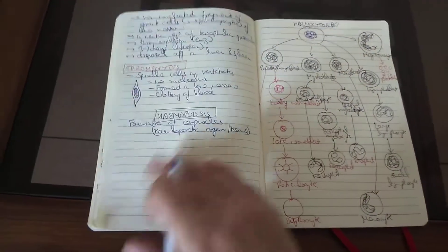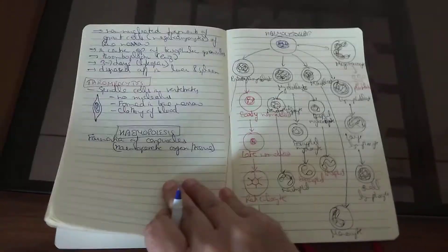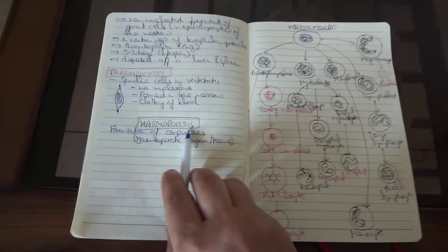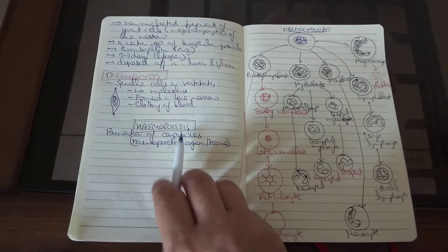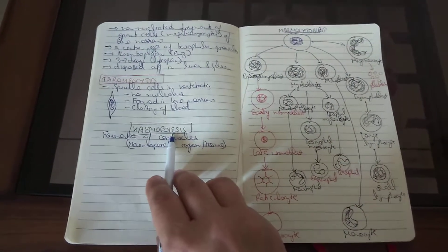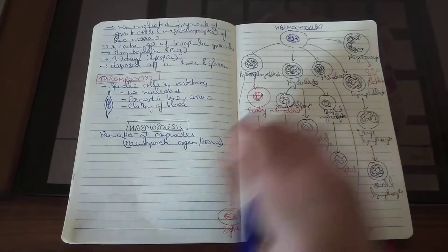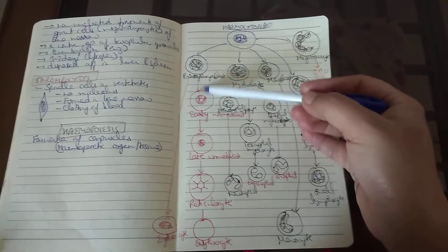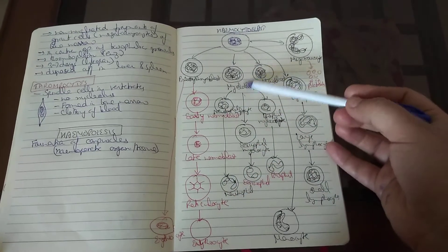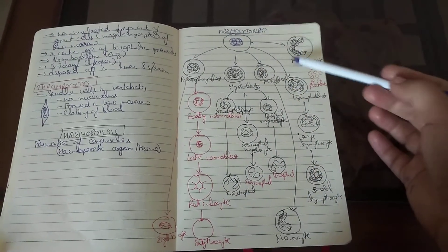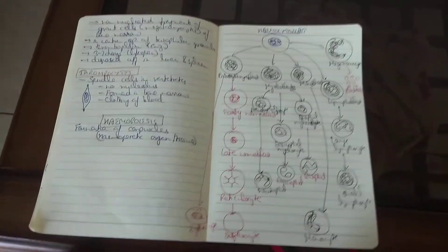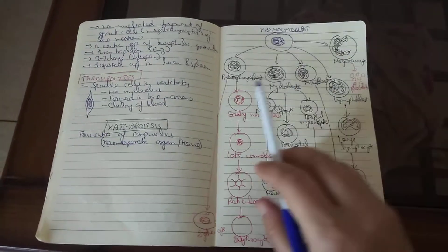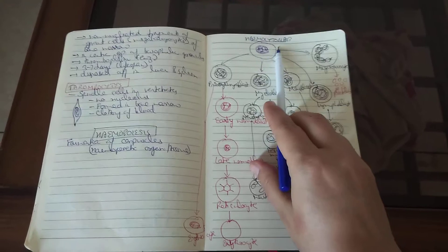Hemopoiesis is the phenomenon of formation of corpuscles; the regions where hemopoiesis takes place are referred to as hemopoietic organs or tissues. This includes erythropoiesis, leukopoiesis, and the formation of platelets. Hemopoiesis occurs in the red bone marrow.